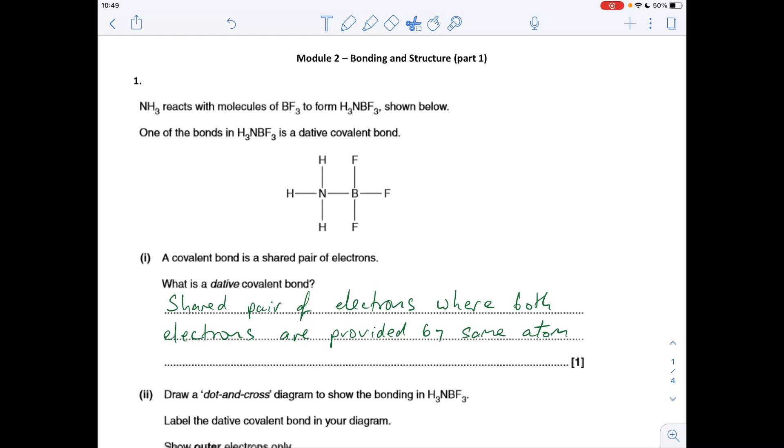Okay, so the first one, the definition for the dative covalent bond: shared pair of electrons where both electrons are provided by the same atom.